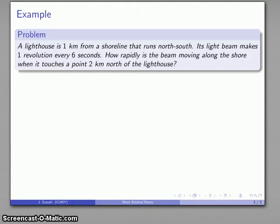So here's another example, a very classic problem. We have a lighthouse one kilometer from a shoreline that runs north-south. This lighthouse has a light beam that makes one revolution every six seconds. The question is how rapidly is the beam moving along the shore when it touches a point two kilometers north of the lighthouse?